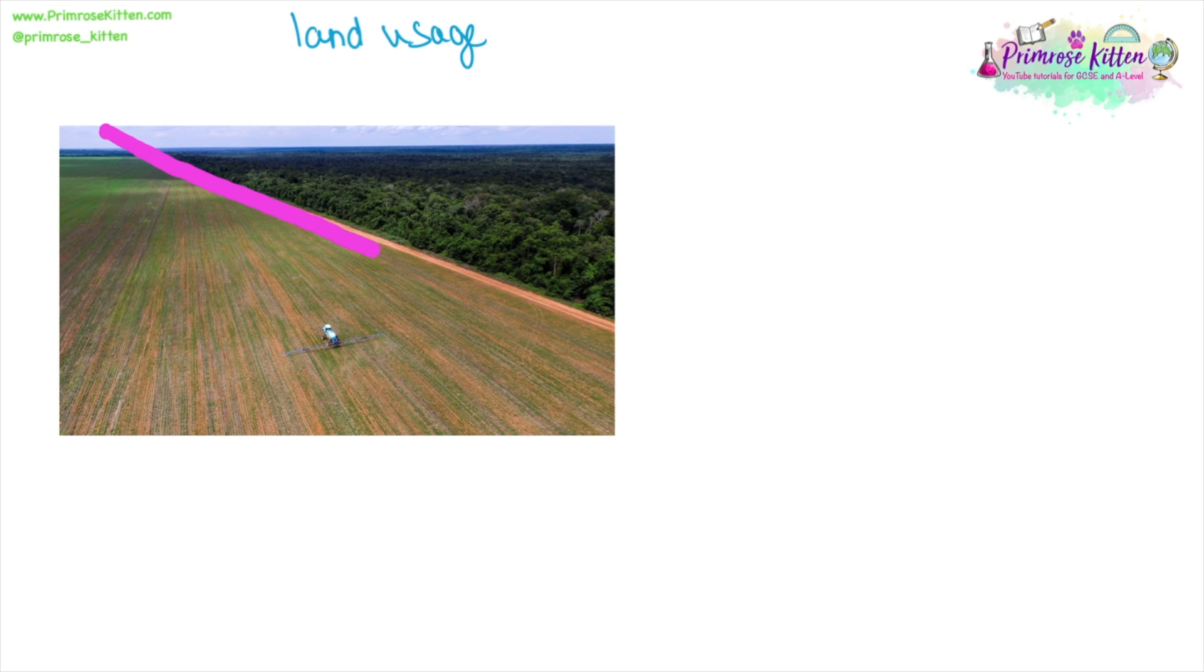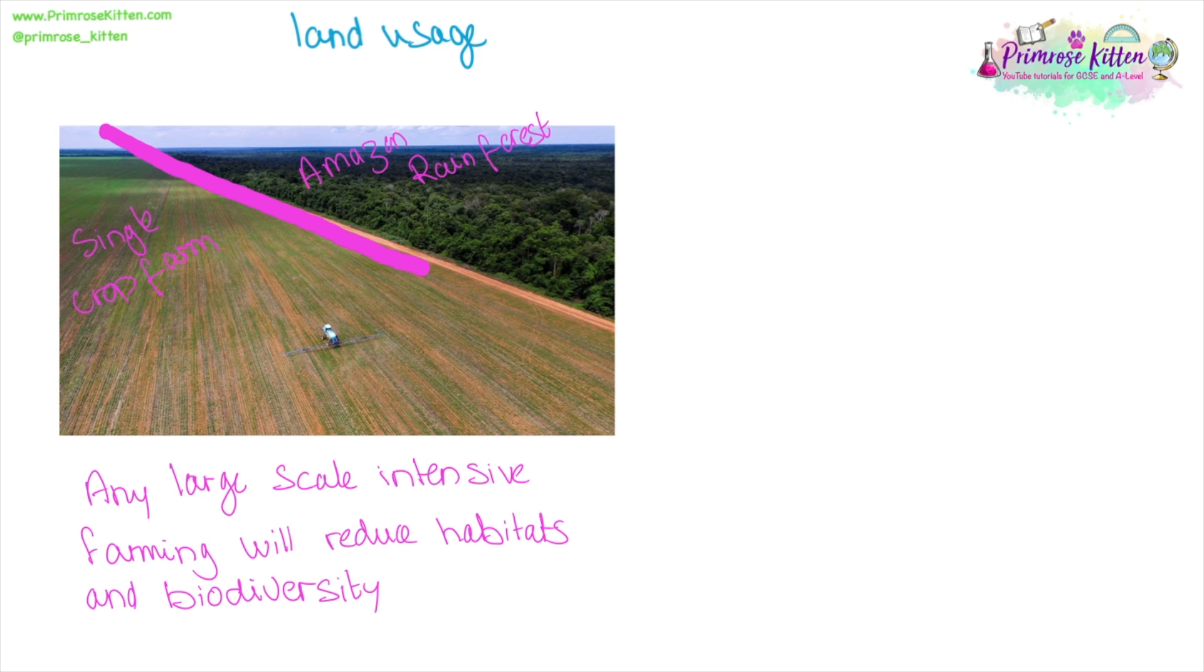And you can see there is a very unnatural line drawn here. On one side we have the rainforest and touching on biology, the amazing biodiversity that is found within there. On the other side we have a field that is growing one single crop. It is not biodiverse in any way at all. Any form of large scale intensive farming will reduce habitats and biodiversity.